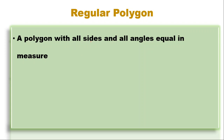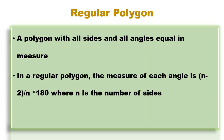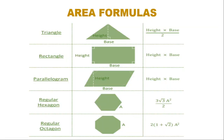A regular polygon is one which has all sides and all angles equal. In a regular polygon, the measure of each interior angle is (n minus 2) divided by n, multiplied by 180, where n is the number of sides. This is an important formula to remember for regular polygons.